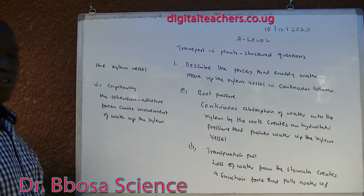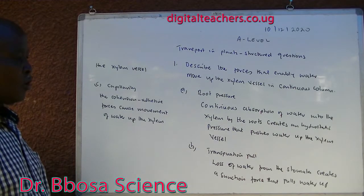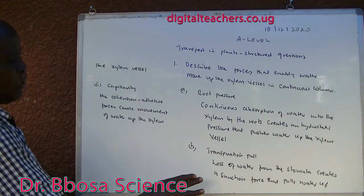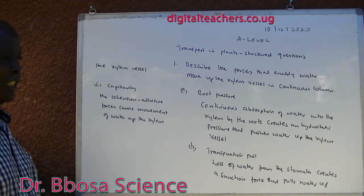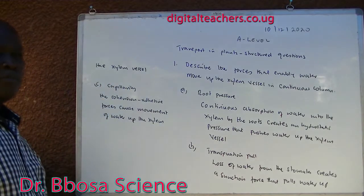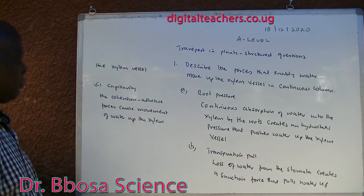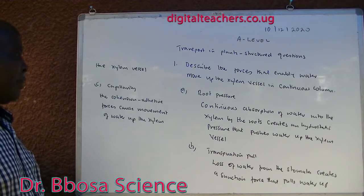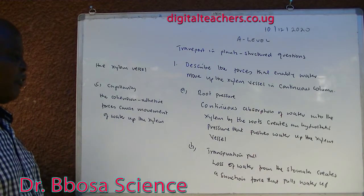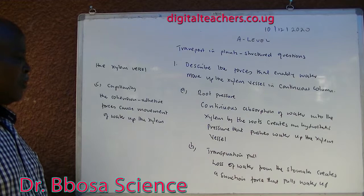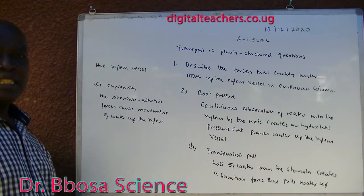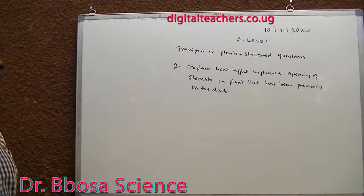B, transpiration pull: loss of water from the stomata creates a suction force that pulls water up the xylem vessel. C, capillarity: cohesion-adhesive forces cause the movement of water up the xylem.